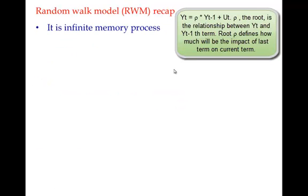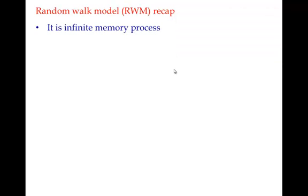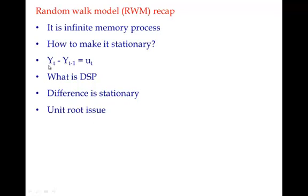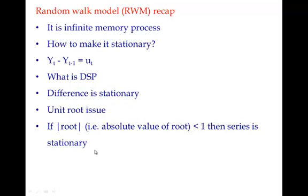To recap: the random walk model is an infinite memory process because any increase in one term carries forward to all subsequent terms. To make it stationary, take the difference of adjacent terms (yt - yt-1), which produces a stationary series — called a Difference Stationary Process (DSP). The unit root issue refers to the coefficient linking yt with yt-1: when it equals 1 or more the series is non-stationary; when its absolute value is less than 1 the series is stationary on its own.